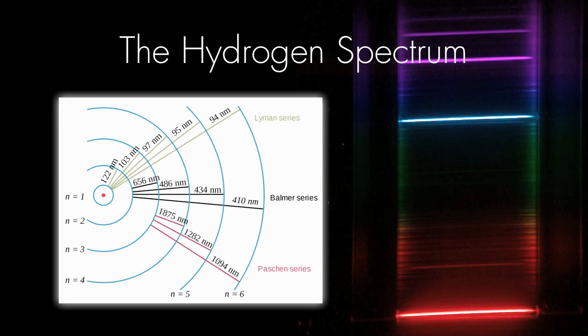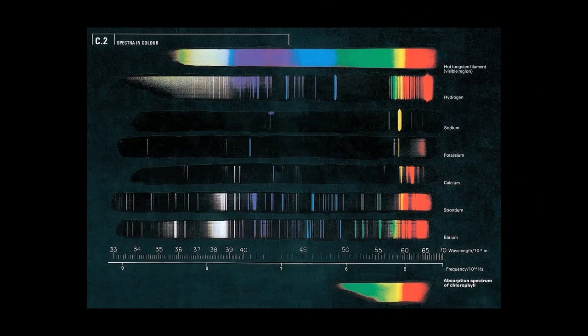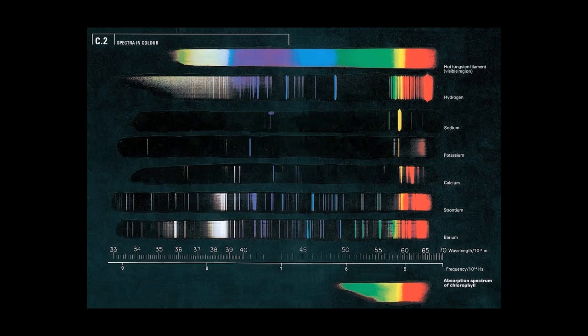The Lyman series and the Paschen series produce, respectively, lines in the ultraviolet and infrared ranges. The atoms of every element have their own unique emission spectra, which we can use like a fingerprint. Here we have several examples from group 1 and group 2 of the periodic table.